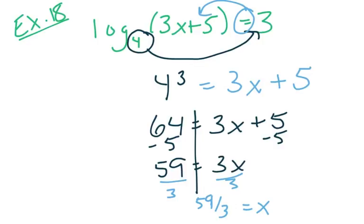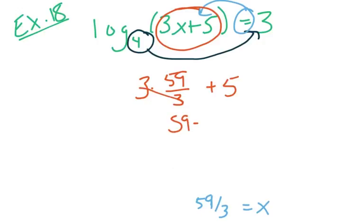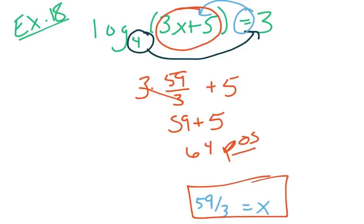So we need to check that still. We'll look up here, and we just need to see if this is still a positive number when I put that in here. So 3 times 59 over 3 plus 5. 3 times 59 over 3 is just 59. And 59 plus 5 is 64, so that's positive. So this is an okay answer. Our answer is 59 over 3.